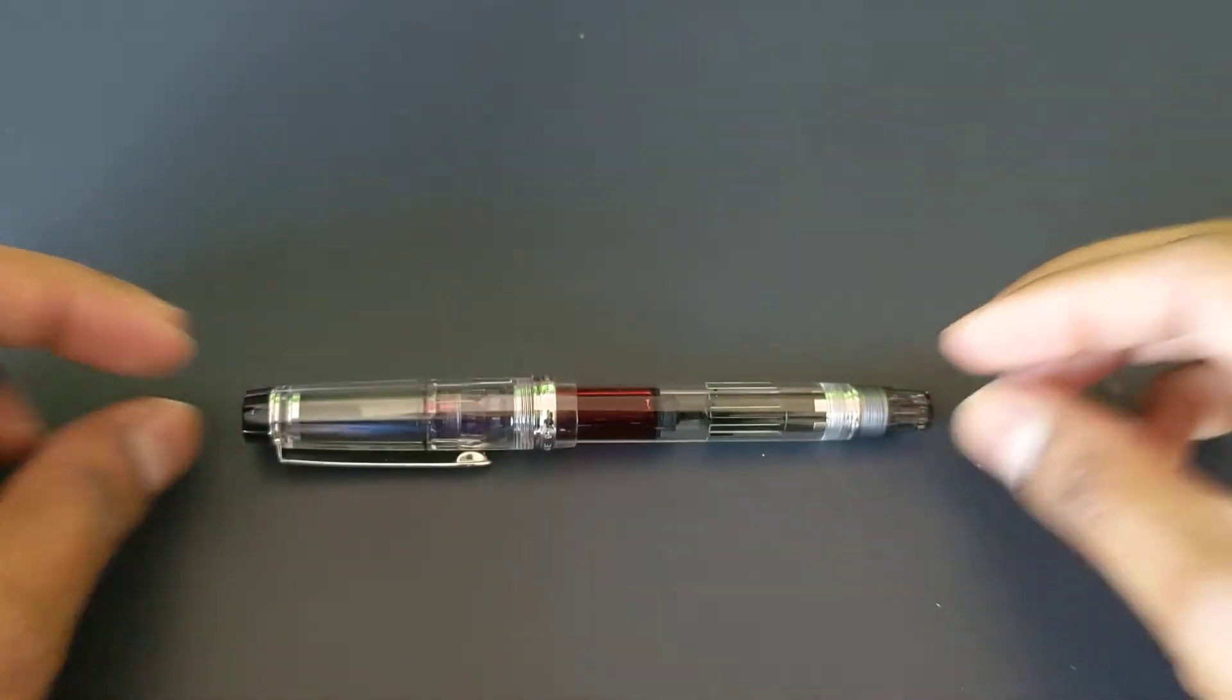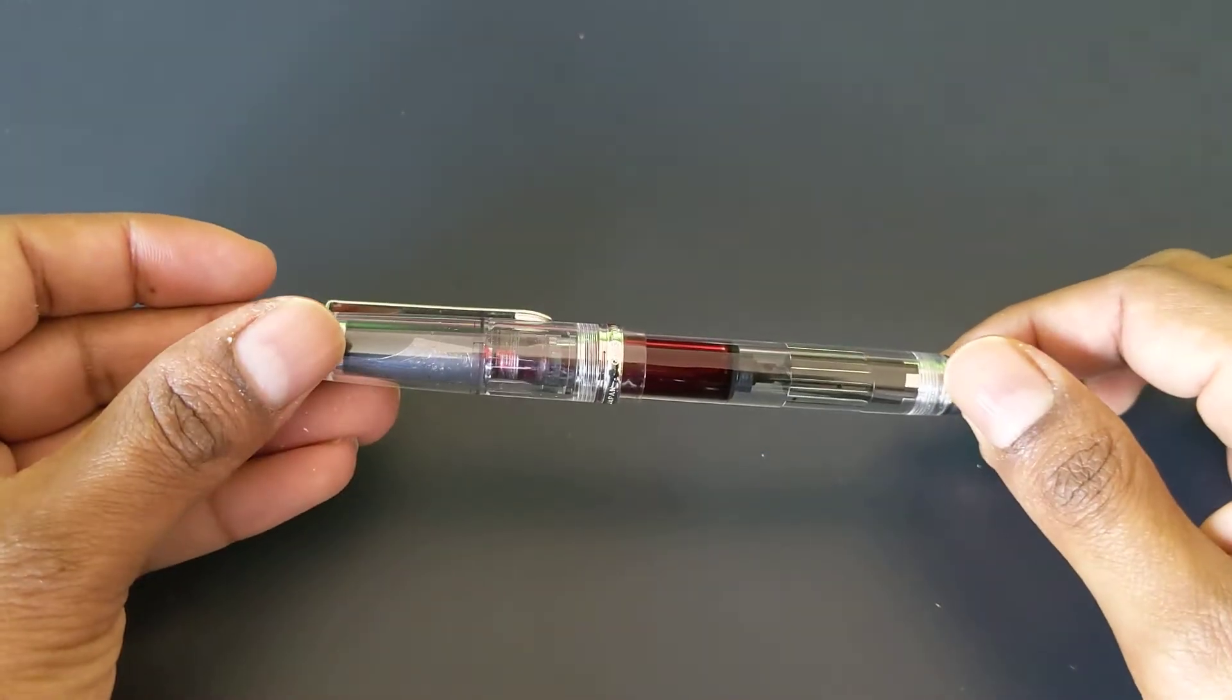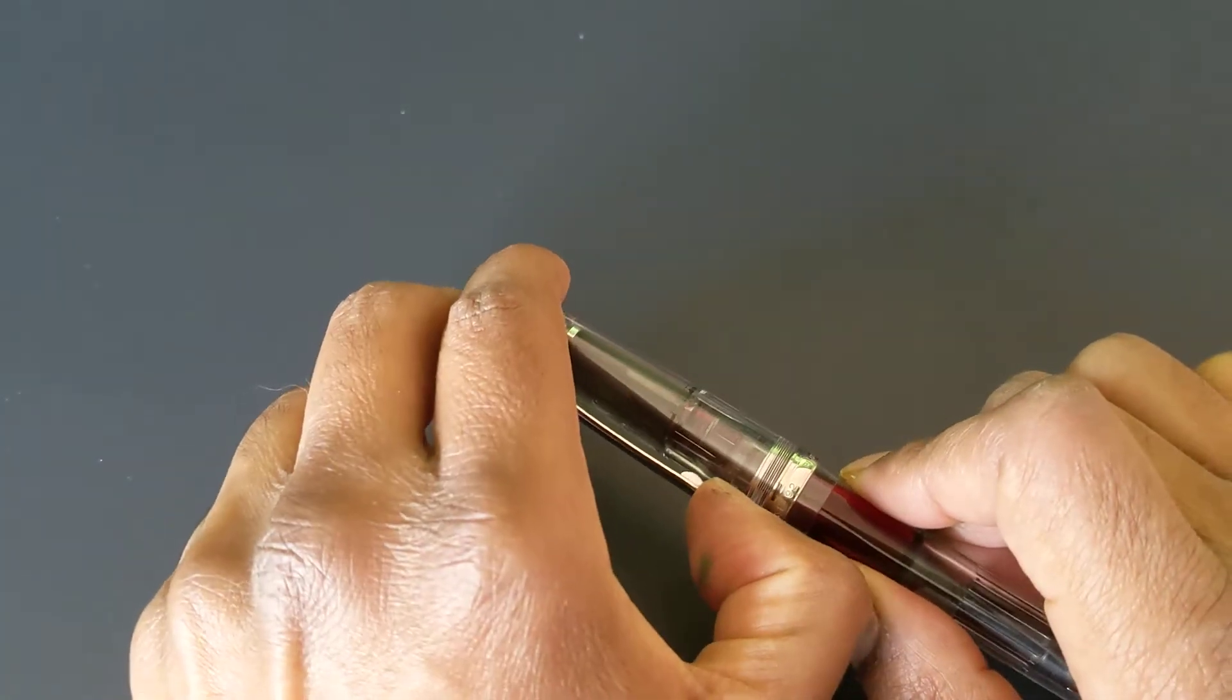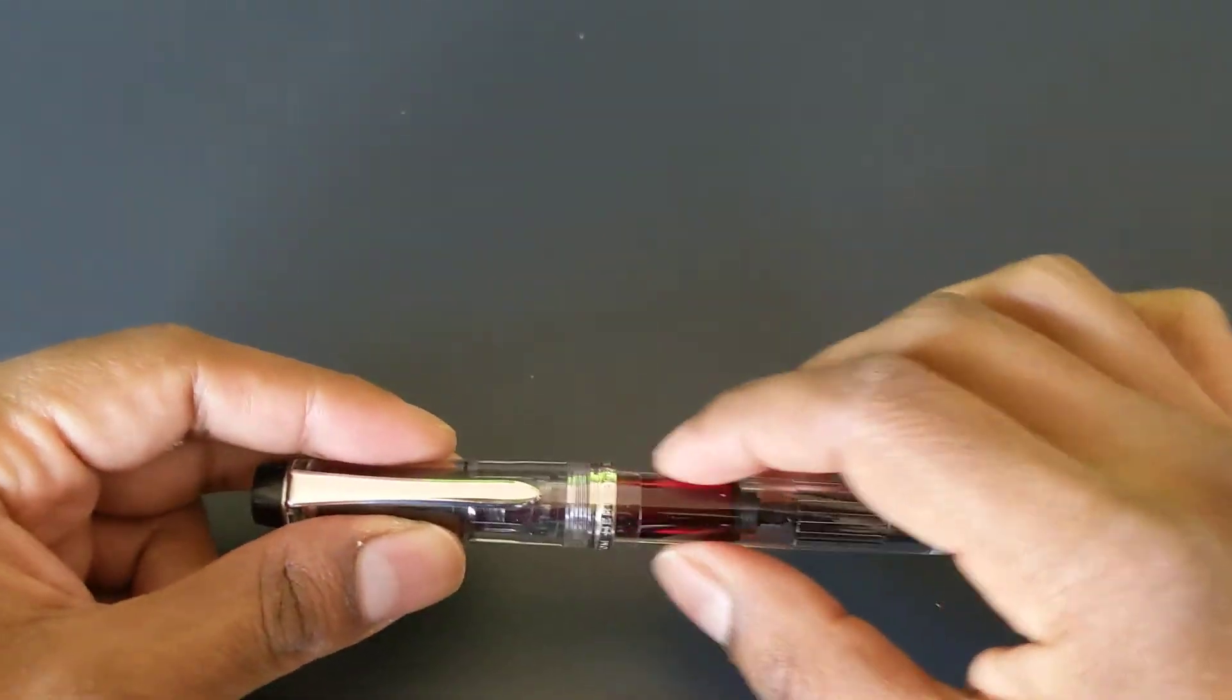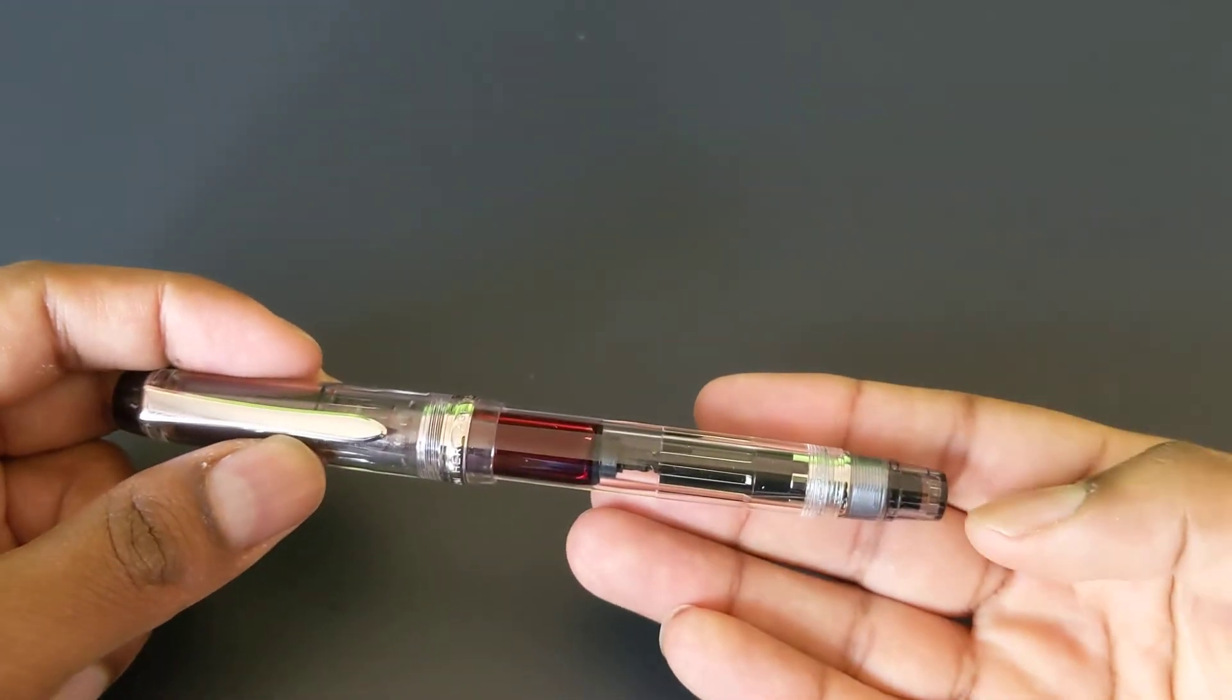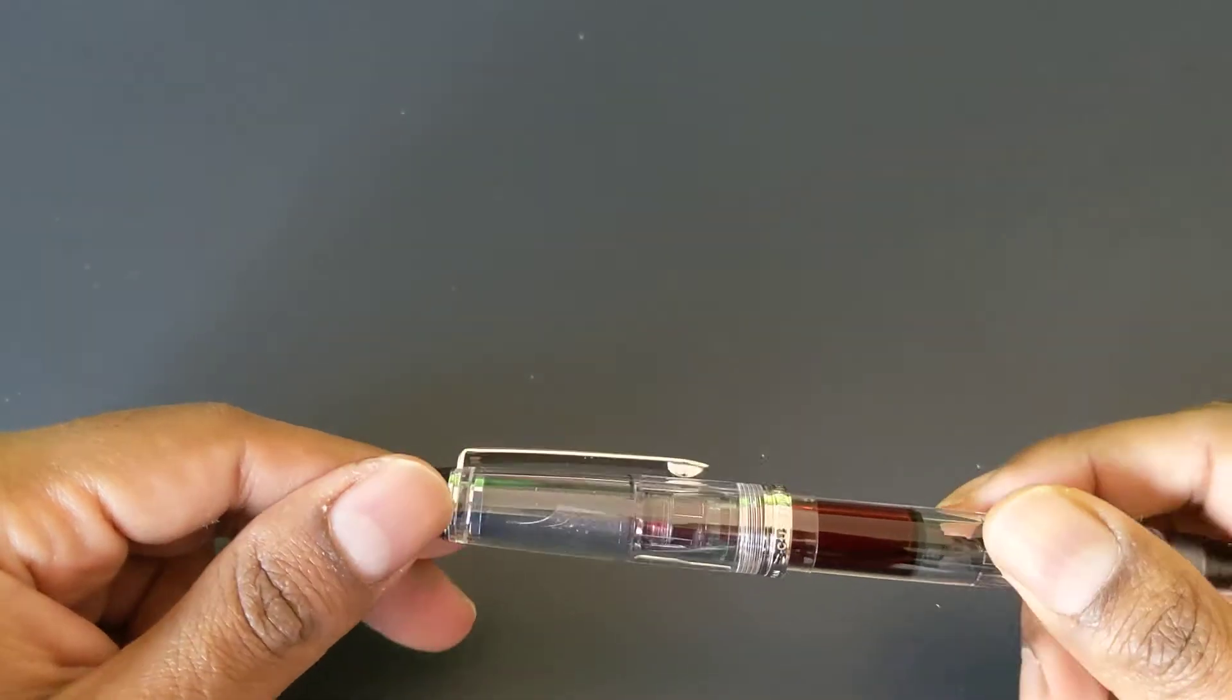Here is the pen. You can see it's got flat end caps both on the top and the bottom. This is a clear demonstrator version. The clip is nice, it's got some spring to it but it'll definitely hold. As I said before, it's a piston filler so you can see the ink and the piston mechanism. The piston end cap along with the top is a translucent black, kind of a smoke color.